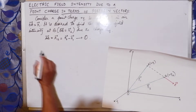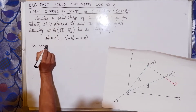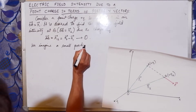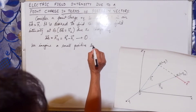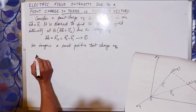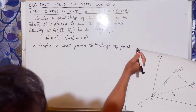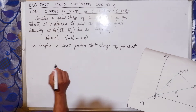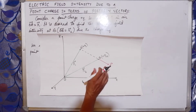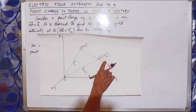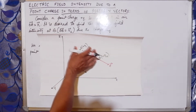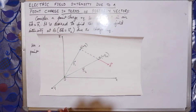Now we imagine a small positive test charge plus Q naught placed at point B. If we place this small positive test charge plus Q naught at point B, we can view this as a system of two point charges — one is Q and the other is Q naught.